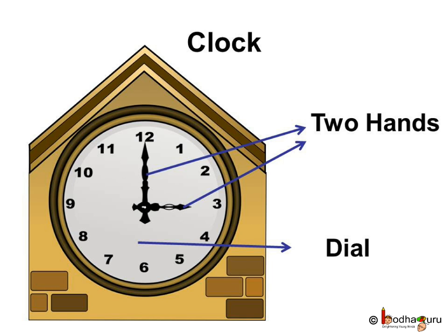As we saw in the last video, a clock has two hands and the face of the clock is called dial which is in the shape of a circle.